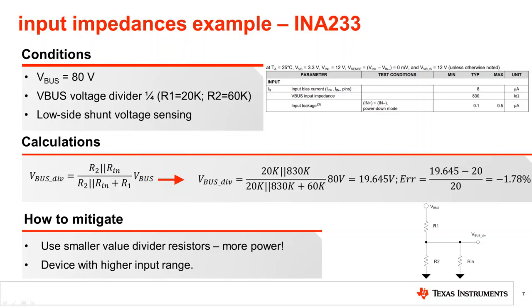Let's look at an example to examine the effect of input impedance. Here we look at the digital power monitor V bus pin. In this example, we want to measure a power supply rail of 80 volts. Since the INA233 input range is limited to 36 volts, we decide to divide the bus voltage down to 20 volts before passing it to the INA233. Considering the effect of input impedance but ignoring resistor tolerance, we can calculate the actual input voltage to be 19.645 volts, which represents a 1.78% deviation from the ideal 20 volts.